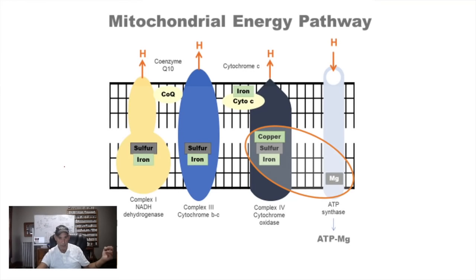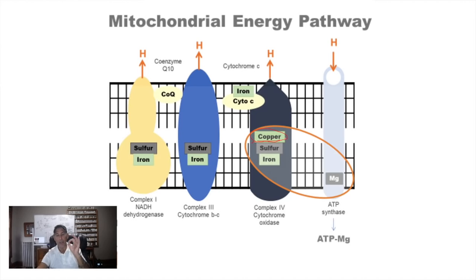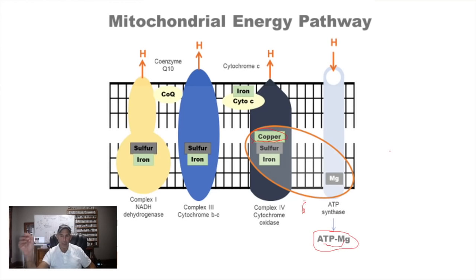When generating energy through mitochondrial energy pathways, glucose goes through glycolysis, then the Krebs cycle, then the electron transport chain. What we see in the electron transport chain is electrons from the Krebs cycle moving through iron-sulfur clusters embedded in complex I, II, and III. Copper guarantees the delivery of electrons to oxygen, making molecular oxygen — which then allows magnesium to bind to the ATP so magnesium can ignite the ATP to break the bond and release energy to run the pumps.